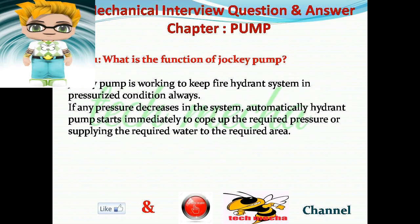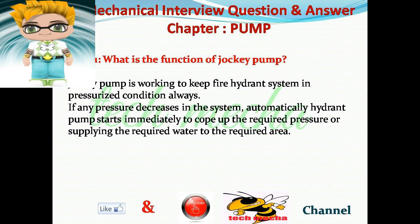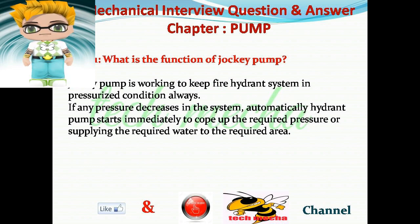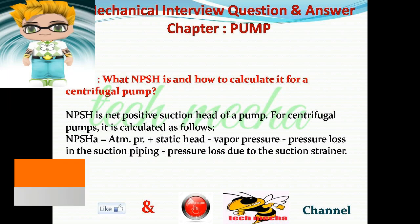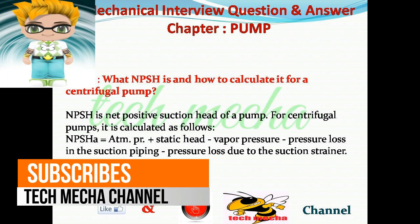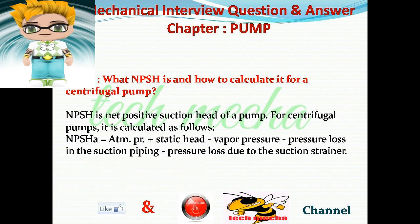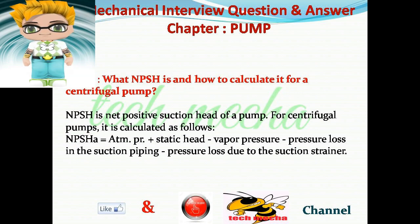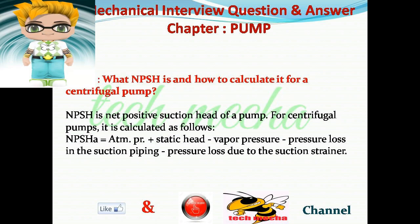Question number 11: What is the function of a jockey pump? Answer: A jockey pump works to keep the fire hydrant system in a pressurized condition always. If any pressure decreases in the system, the hydrant pump starts automatically to supply the required pressure or water to the required area. Question number 12: What is NPSH and how is it calculated for a centrifugal pump? Answer: NPSH equals atmospheric pressure plus static head minus vapor pressure minus pressure loss in the suction piping minus pressure loss due to the suction strainer.